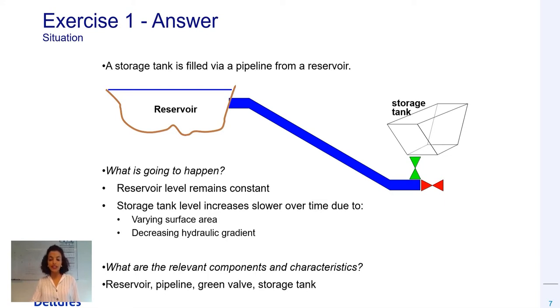The decrease in the hydraulic gradient of the system and the fact that the surface area of the storage tank increases with higher water level causes the increase of the water level in the tank to occur at a decreasing pace.